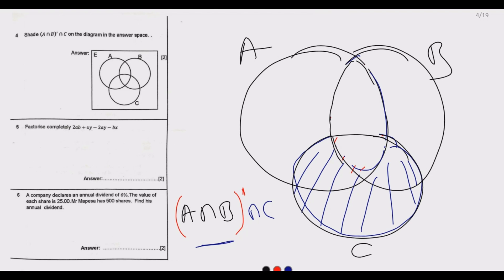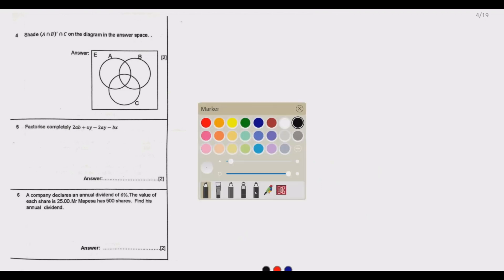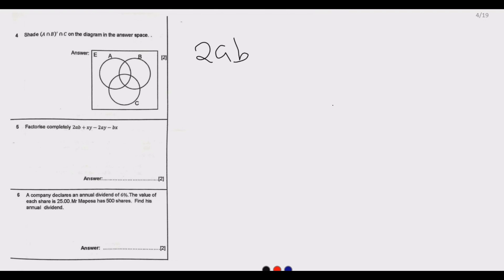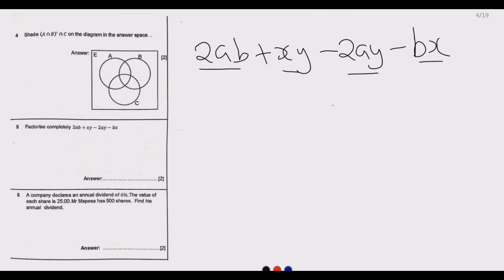Let us look at question number 5, which asks us to factorize completely: 2ab plus xy minus 2ay minus bx. The first thing we do is collect like terms. This term has A and this term has A; this term has X and this term has X. So we rearrange to get: 2ab minus 2ay, plus xy minus bx.